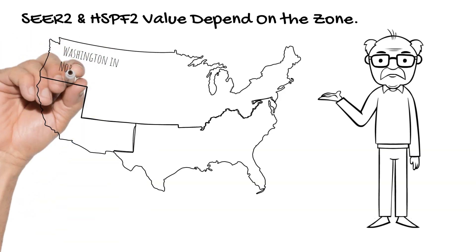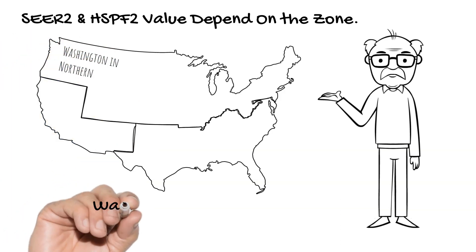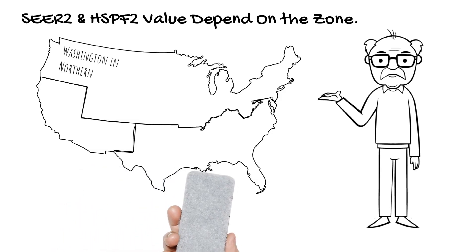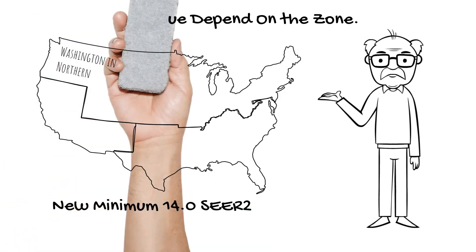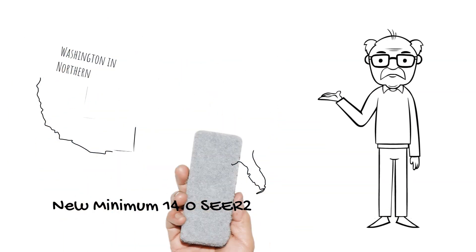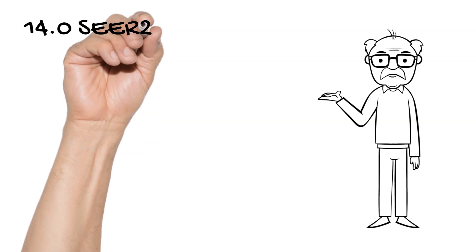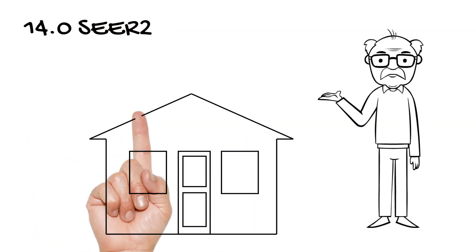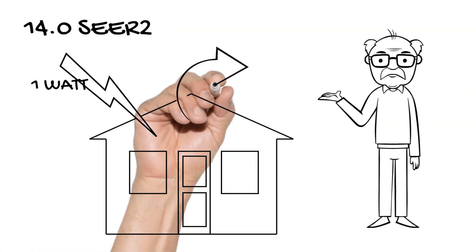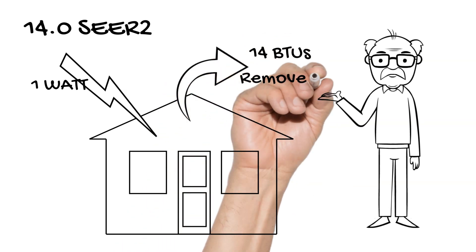Here in Washington, the previous minimum was 13.0 SEER. The new minimum is 14.0 SEER2. 14.0 SEER2 means that for every watt of power used to cool your home, 14.0 BTUs must be removed.